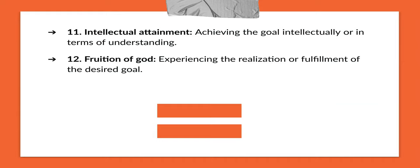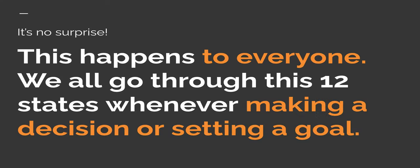The twelfth one is fruition of goal — experiencing the realization of the goal. We've achieved it — we've got an iPhone 15. We pick up the money, go to the shop, and get it. This is no surprise; this happens to everyone. We all go through these 12 states whenever making a decision. We go through this every day — it might be unconscious, you don't always write them down. But in your mind, consciously and unconsciously, your mind processes all of this for you to arrive at a goal, achieving it or not.